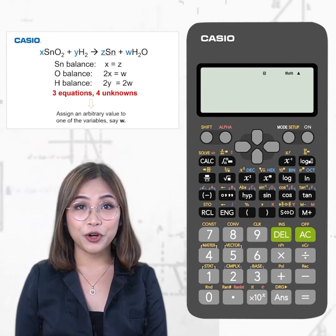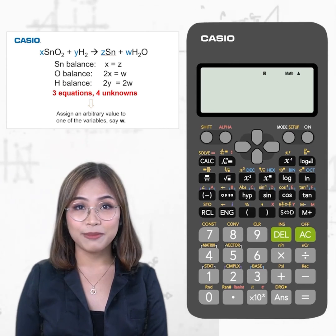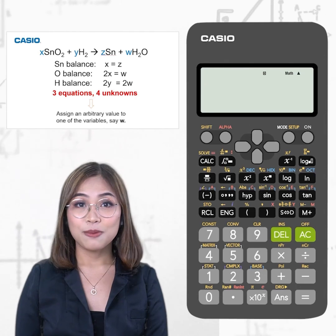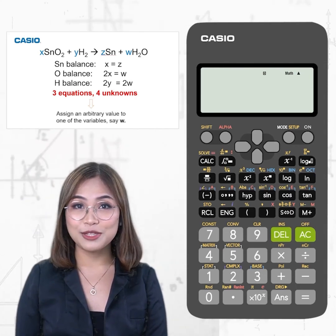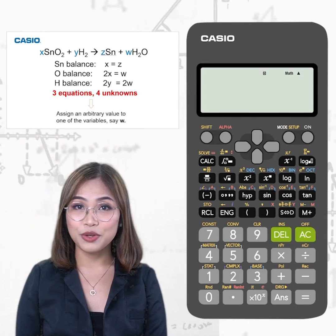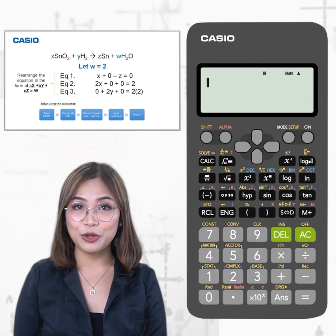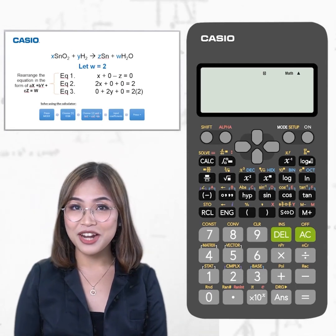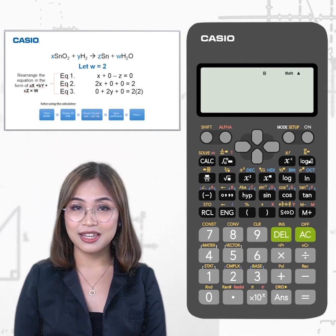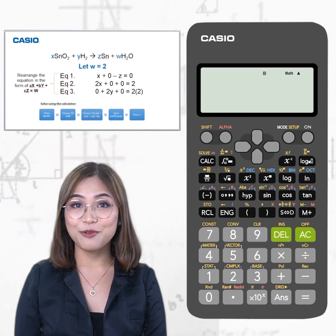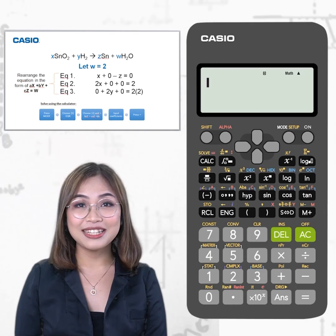However, we have four unknowns — namely w, x, y, and z — but we only have three equations, meaning we can't solve this simultaneously yet. What we can do is assign an arbitrary value to one of the variables; say, we can let w equal 2. Then we will rearrange the equations in the form ax plus by plus cz equals d. By doing this, we can reduce our problem to three equations with only three unknowns.